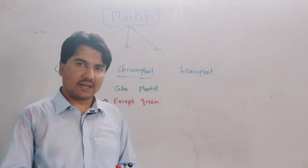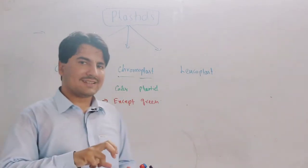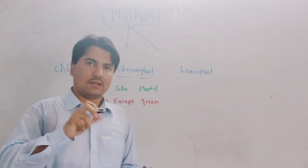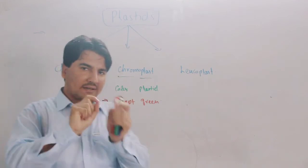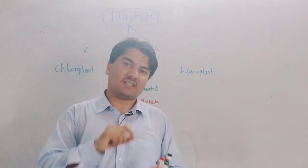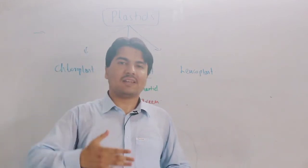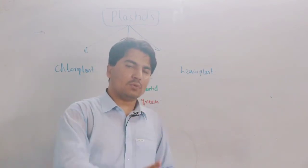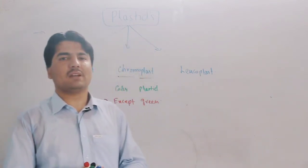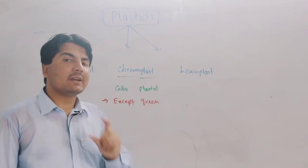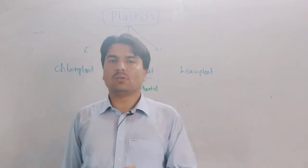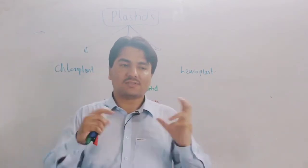Chromoplast is found in the roots and petals of flowers. The petals are the colored part of the flower - red, yellow, blue, pink - but not the green color.